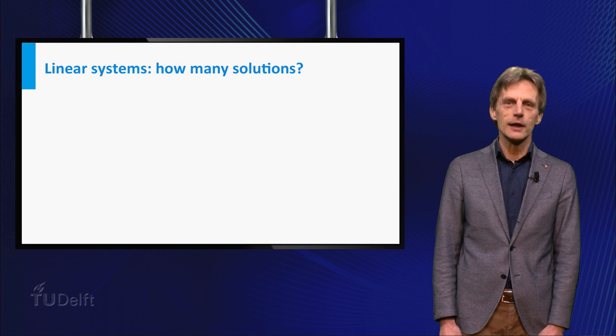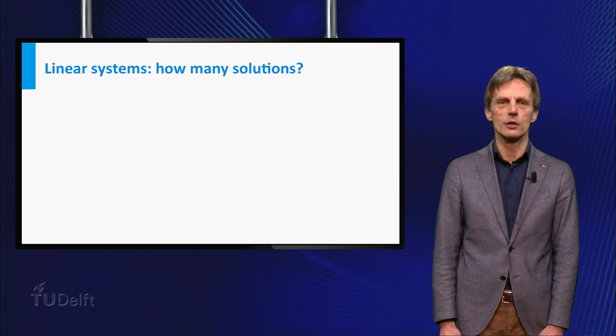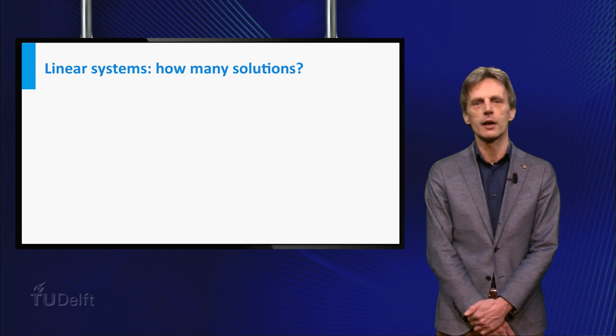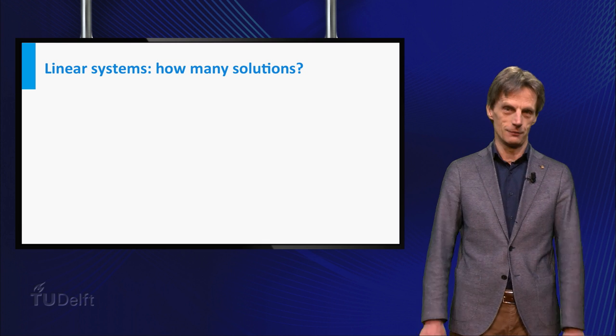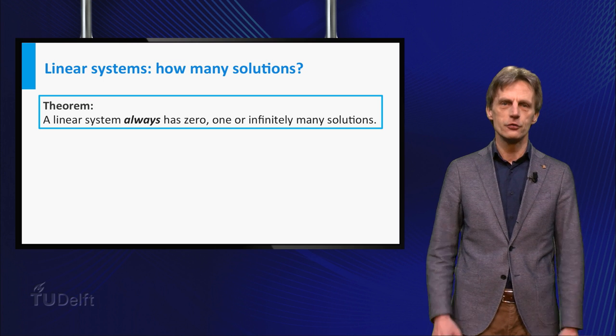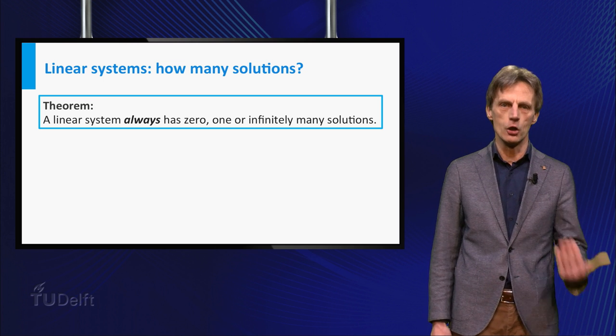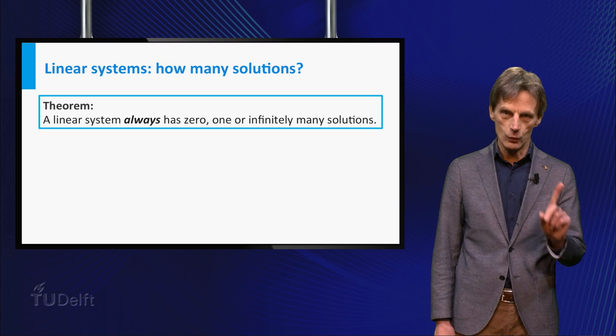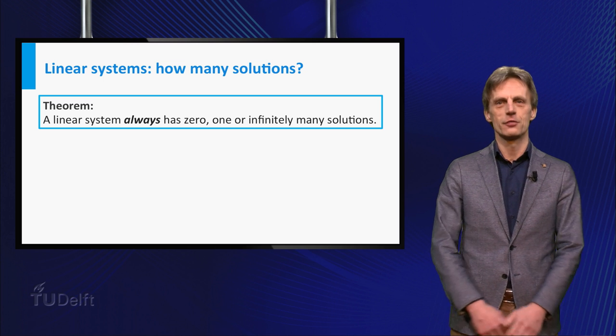You are going to learn in class that the three possibilities that you have encountered in the examples above are in fact the only possibilities in general. In other words, you are going to learn in class that each system of linear equations has either no solution, precisely one solution, or infinitely many solutions.